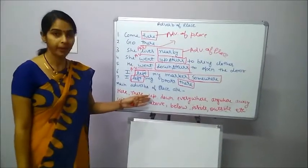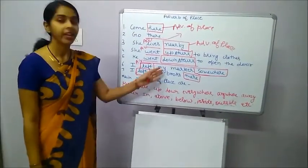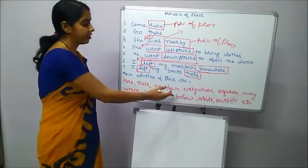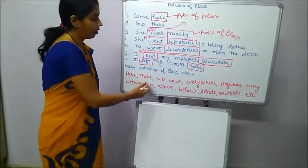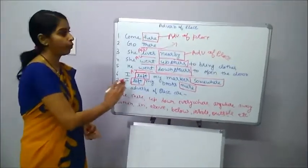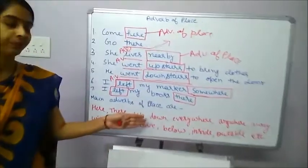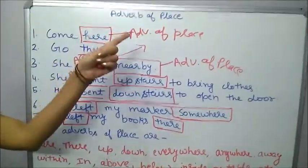You can make some sentences by using these words. I went upside, he went down stairs, please get down, go up, below, inside, outside. These all the words can be used for making sentences and these words tell us about the adverb of place.